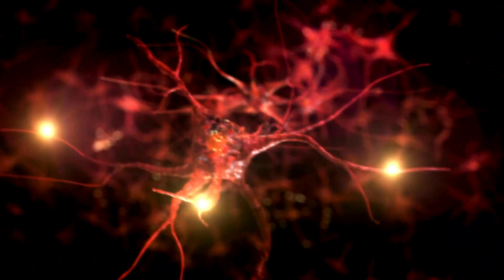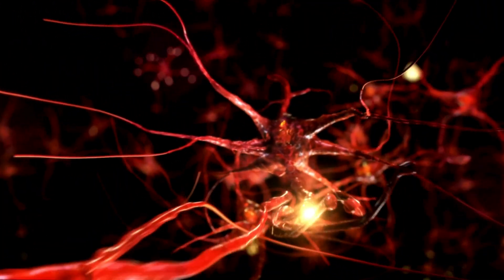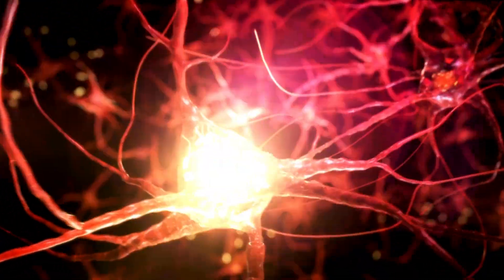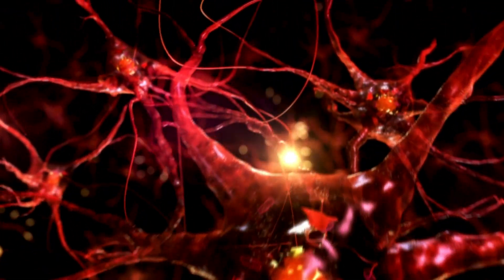In summary, oligodendrocytes play a fundamental role in maintaining the health and function of the nervous system, ensuring that our neurons can transmit signals quickly and efficiently. By understanding their importance and adopting healthy habits, we can help maintain our health and our brain in great shape, promoting a full and active life.